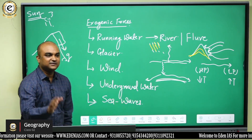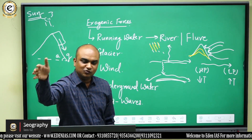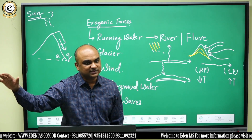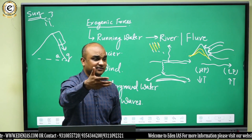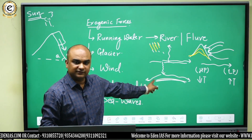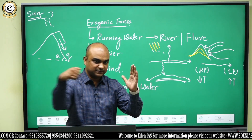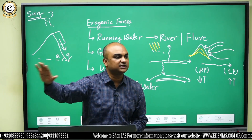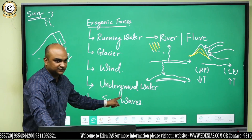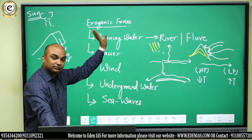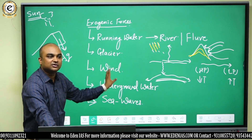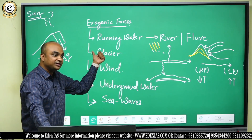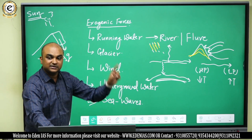Sea waves are the movement of water in a wave-like format across the ocean surface. Sea waves are generated by the force of wind, and wind is generated due to the sun through differences in pressure. As waves splash across coastal areas they break down coastal rocks and denude the surface. So sea waves also derive their ultimate energy from the sun.